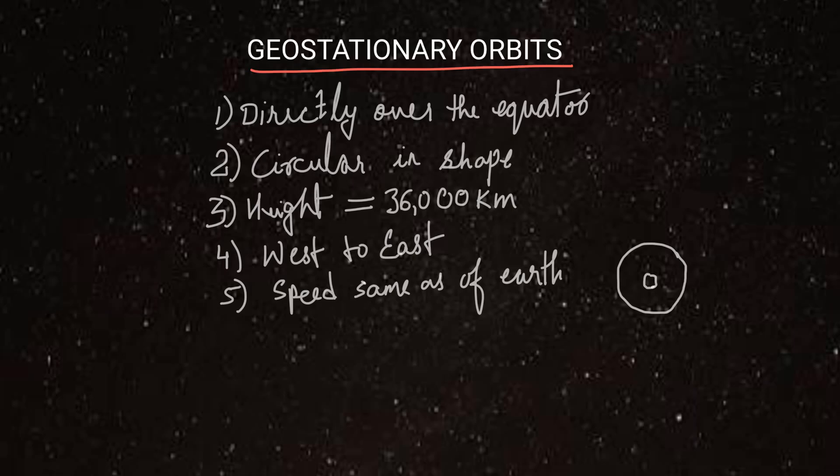So from a fixed point on the earth, if we see this satellite, it will always appear to be stationary. Because the satellite is moving at the same speed, in the same direction, with the same velocity as earth is moving. So if we see the satellite from here, it will always appear to be stationary. And so, these satellites are called geostationary satellites.